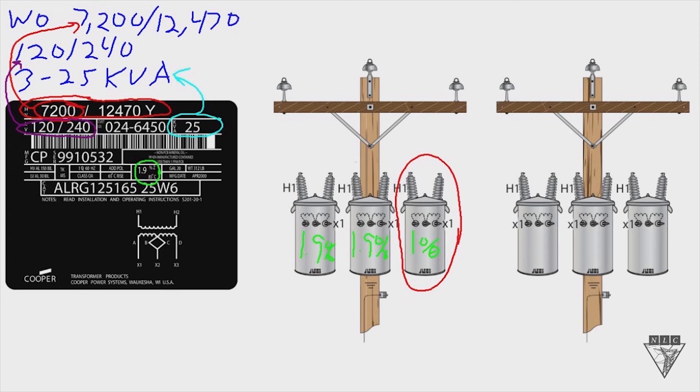Okay, so the last part of the equation is the polarity. And I'm going to circle it, it's right here in the middle. And you want to try and find three transformers that have the same polarity. In this particular case, our transformers show additive polarity.